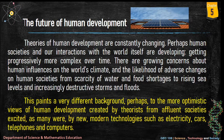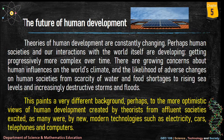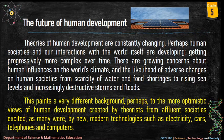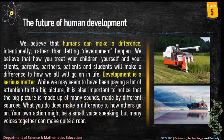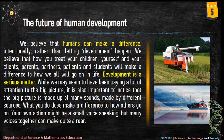The future of human development: theories of human development are constantly changing. Human societies and our interactions with the world itself are developing, getting progressively more complex over time. There are growing concerns about human influences on the world's climate and the likelihood of adverse changes — from scarcity of water and food shortages to rising sea levels and increasingly destructive storms and floods. This paints a very different background from the more optimistic views of human development created by theorists from affluent societies, excited by new modern technologies such as electricity, cars, telephones, and computers.